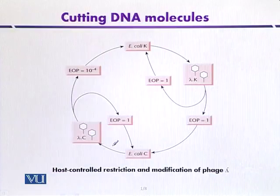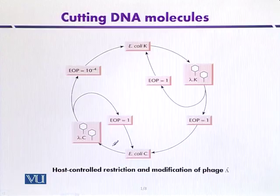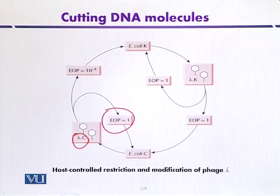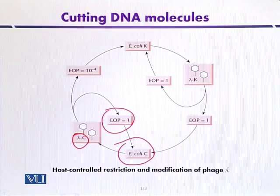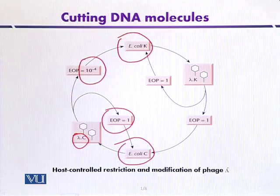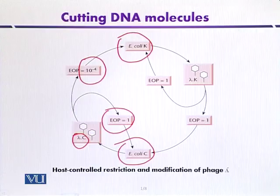This diagram illustrates host-controlled restriction and modification of phage lambda. If phage lambda bacteriophages that infect E. coli C are used, the plating efficiency will be high — approximately 1 — when grown on E. coli C. But if the bacterial stock grown on E. coli C is directly used to infect E. coli K, the plating efficiency is very, very low, indicating restriction of the phage by the second host strain, E. coli K.